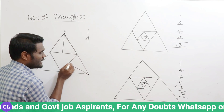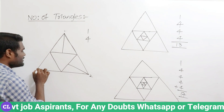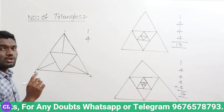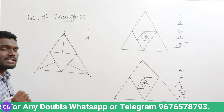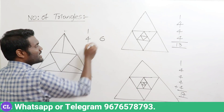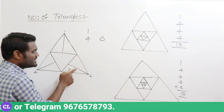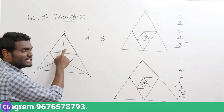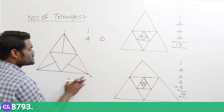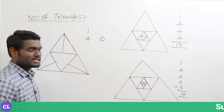Similarly, if you draw a line on another side you get two extra triangles, and a line on the third side also gives two extra triangles. So total extra triangles from extensions: two plus two plus two equals six extra triangles. Which means for each extension of a line you are getting two extra triangles, and with three extensions you get six extra triangles.